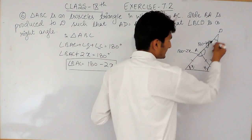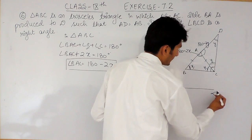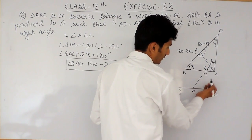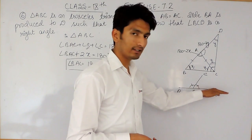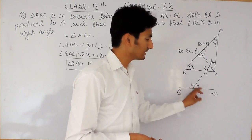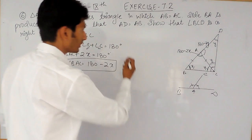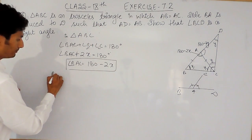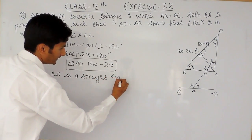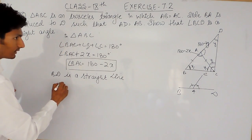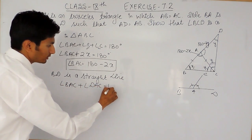Because BD is a straight line, the sum of angles on a straight line equals 180 degrees. So the sum of angle BAC plus angle DAC must equal 180 degrees. That is, these two angles together must add up to 180 degrees.